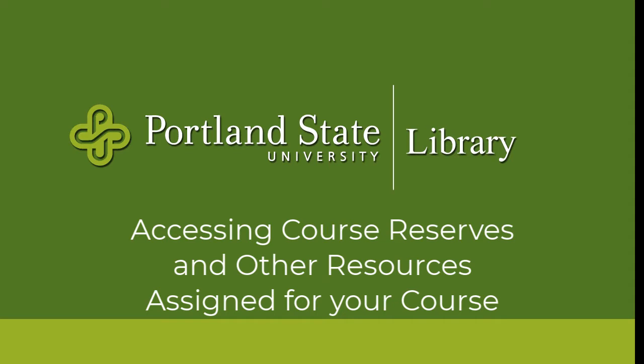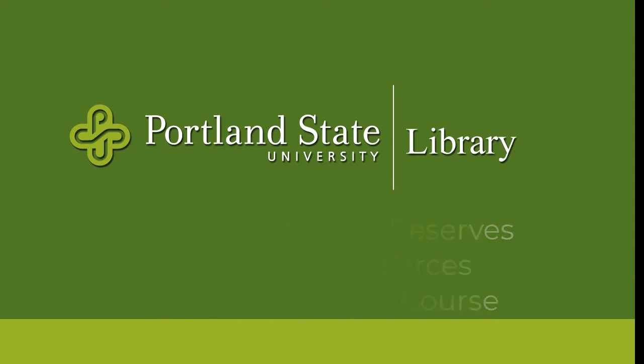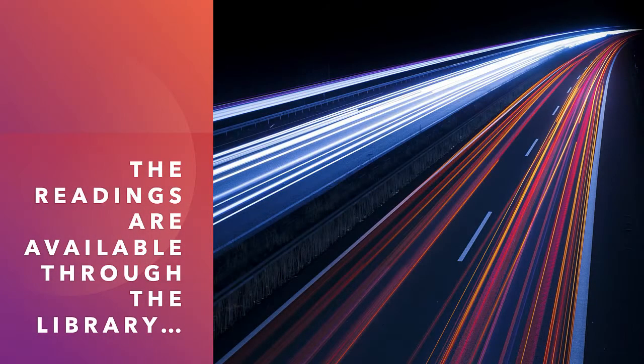Your syllabus says a book, ebook, or article is available through the library. What exactly does that mean? You might think this means the item is on course reserve. While this may be the case, it's not always so. Ebooks and electronic articles are generally not tagged as a course reserve, and thus are not found when limiting your search to only course reserves.